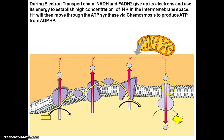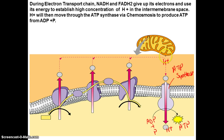This hydrogen gradient is then used to convert ADP plus phosphate into ATP — this is what we call chemiosmosis. Through chemiosmosis, an enzyme called ATP synthase takes the hydrogen flowing back through it like a turbine, and that energy converts ADP plus phosphate to ATP. Hydrogen goes from high concentration in the intermembrane space to low concentration in the matrix, and this facilitates ATP synthesis.